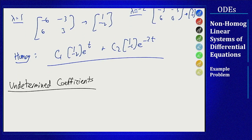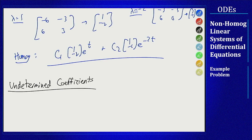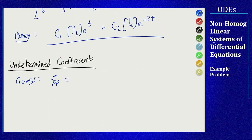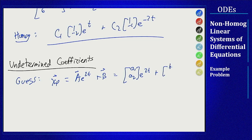For undetermined coefficients we need to look back at our non-homogeneous part of the equation itself. In that term I see e to the 2t and I see a constant term in the 1 and the 4. That means I can make my guess to be a1, a2 times e to the 2t plus b1, b2. Because we have a two component system here, all these vectors will have two components in them.